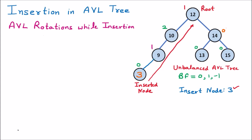We check the parent of 3, which is 9. The balancing factor of 9 is 1, which follows the criteria. Then above 9 on the same path, we check the parent which is 10. Node 10 has a balancing factor of 2, which does not follow the criteria, so node 10 is our defaulter node. This is the main node, and this subtree will be rotated.